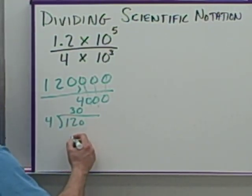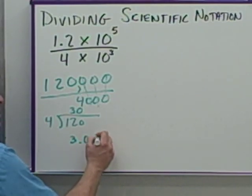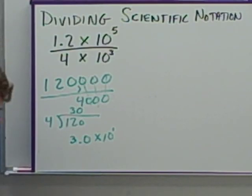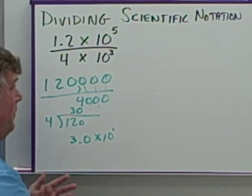In scientific notation, 30 would be written as 3.0 times 10 to the 1. So that's what we should expect as the answer if we do this a different way.